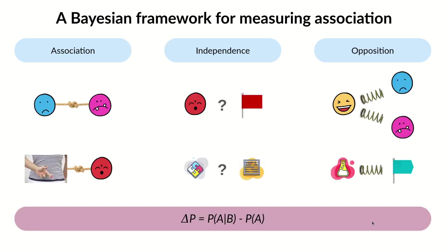Once you have these labels, you can check for association between them — when they tend to appear together — or they can be independent, when they appear together at the same rate as you'd expect by chance, or opposed, when the appearance of one reduces the chance that the other appears.